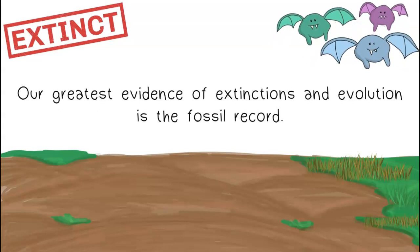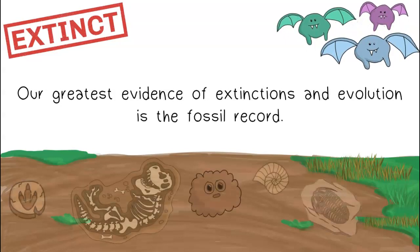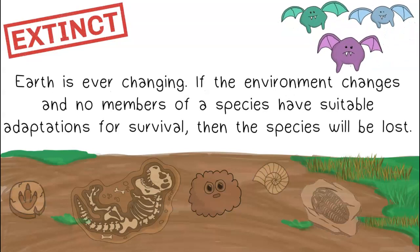Our greatest evidence of extinction and evolution is the fossil record. Earth is ever-changing. If the environment changes, and no members of a species have suitable adaptations for survival, then the species will be lost.